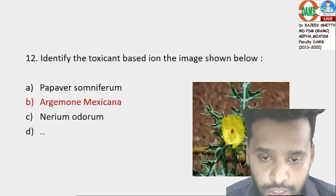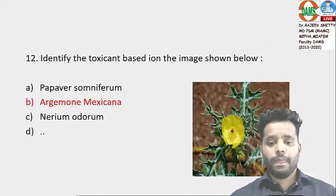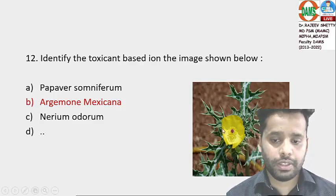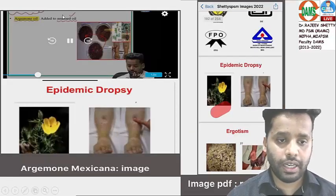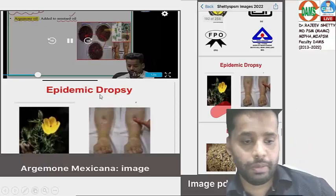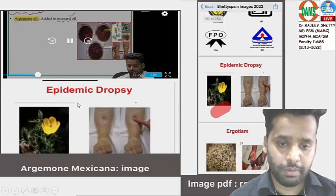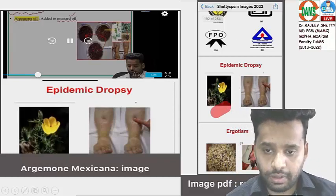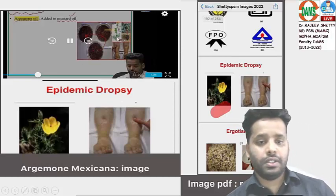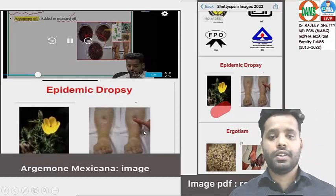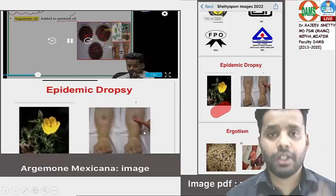Identify the toxicant based on the image shown: it looks like mustard — Argemone mexicana. The adulterant added is Argemone oil to mustard oil, leading to Epidemic Dropsy. This image was included in the discussion sheet and covered in class. The same toxicant image can also appear in forensic medicine.